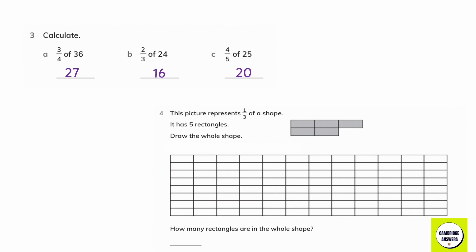This picture represents 1 third of a shape. It has five rectangles. Draw the whole shape. How many rectangles are in the whole shape? 15.